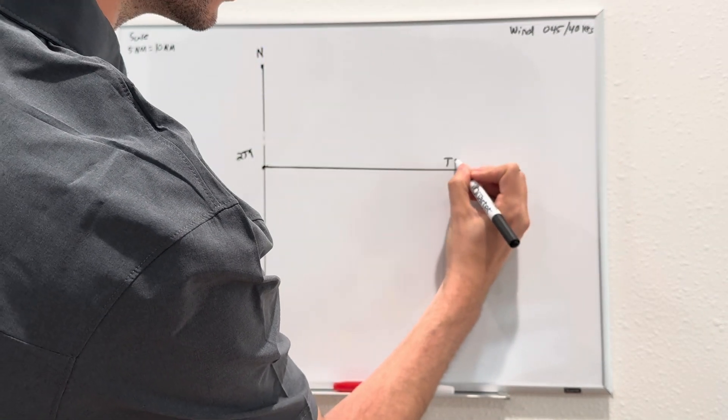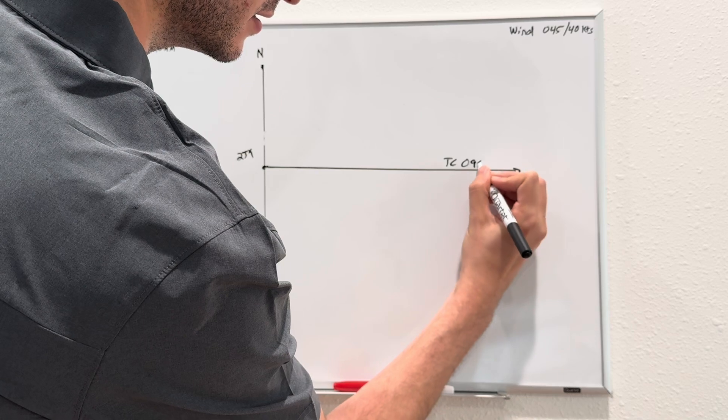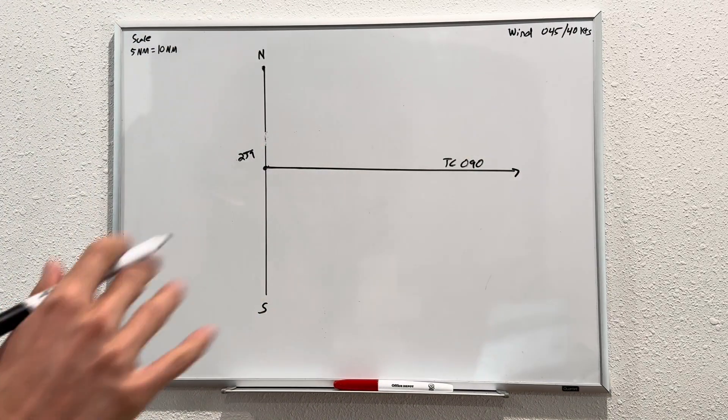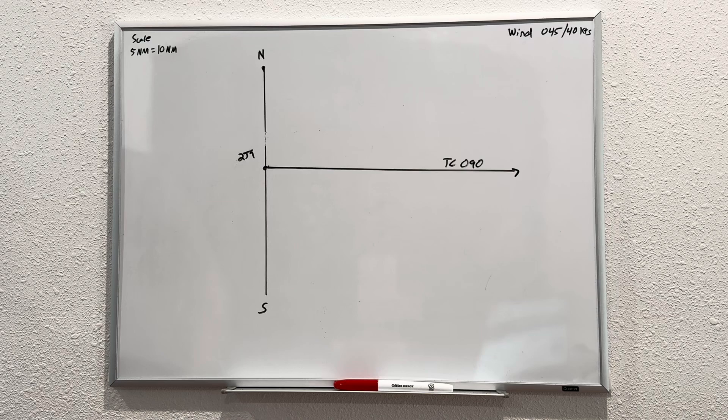We want to go from Quincy to Baker's Mill, which is 84 nautical miles. True course is 090. Step one is complete. Good job, you made it this far.